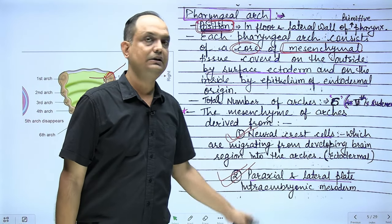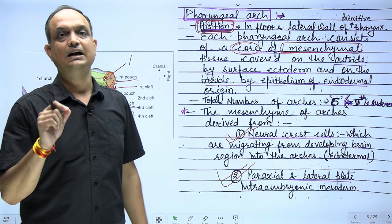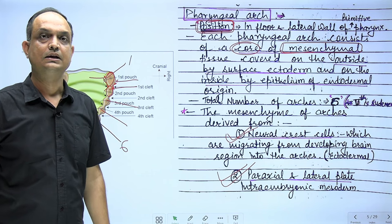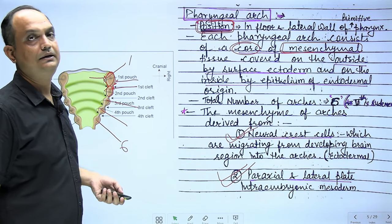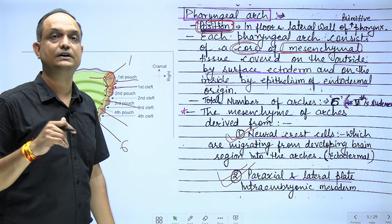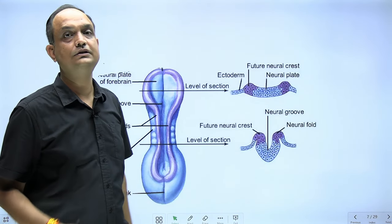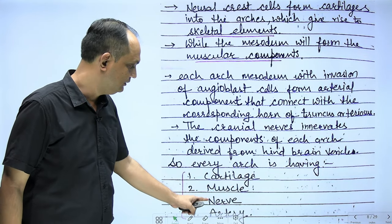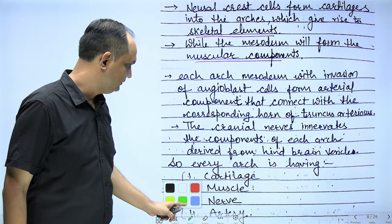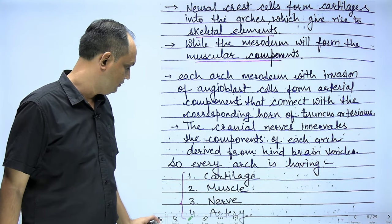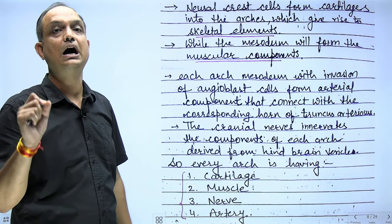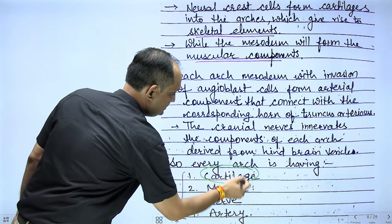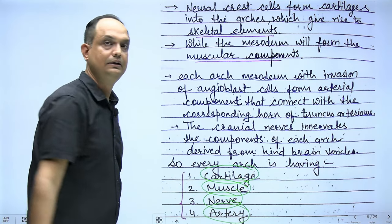Each arch's mesenchyme differentiates into four components: cartilage, muscle, nerve, and artery. This is an important exam question — every pharyngeal arch has these four components.